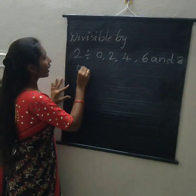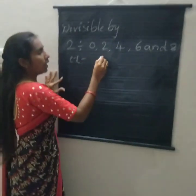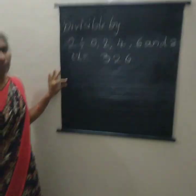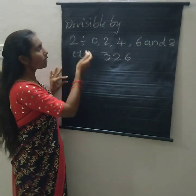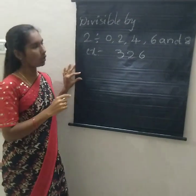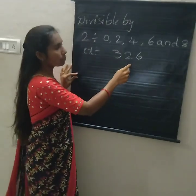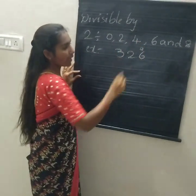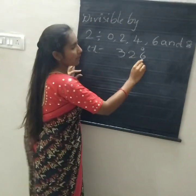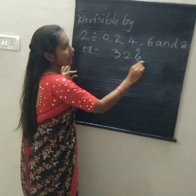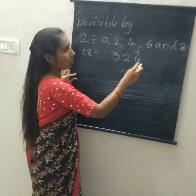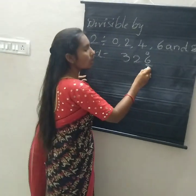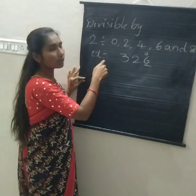So we are taking one example first: 326. We are checking the divisibility of 2 rule. First we are checking the one's place. In this number, which number is in the one's place? 6. So 6 is an even number, and all even numbers are divisible by 2. So 326 is divisible by 2.